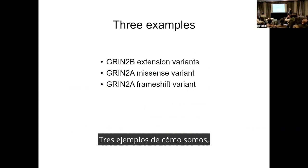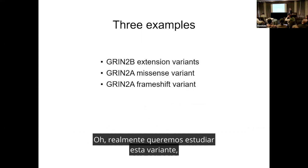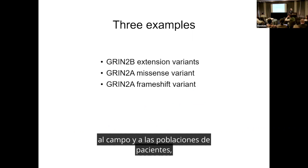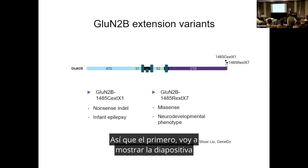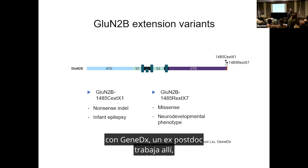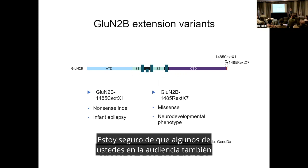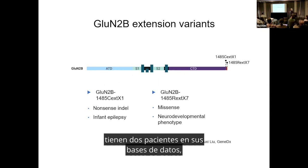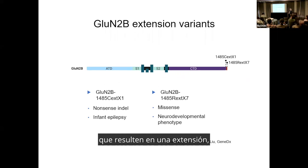I'm going to tell you three examples of how we went from having variants we didn't want to study to now having so many we have to choose carefully which are most beneficial to the field and patient populations, and most revealing of structure-function. The first example: we have collaborations with GeneDx, where a former postdoc works, and they have two patients in their databases with variants that result in a C-terminal extension — which I find completely fascinating.